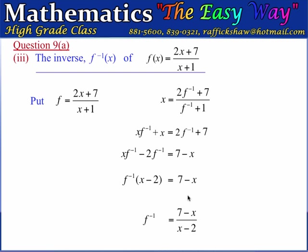A simpler way to view the transposition is to say we take x minus 2 and divide it under 7 minus x. Now that we have f to the minus 1 as the subject, we put back the notation to express it as a function of x. So f to the minus 1 of x equals 7 minus x divided by x minus 2. That is our inverse function and the answer for that part of the question.